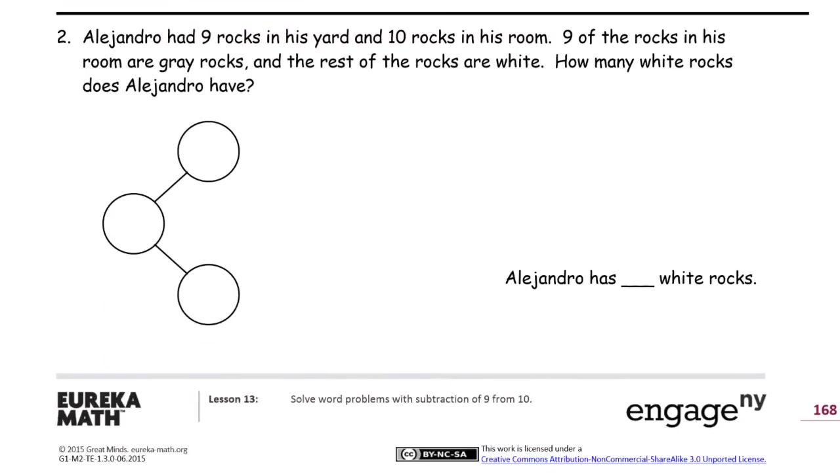Alejandro had 9 rocks in his yard and 10 in his room. So here's 9 in his yard and 10 in his room. 10 and 9 together make 19. The number bonds are already finished, and these are all Alejandro's rocks. Let's say A for Alejandro. Nine of the rocks in his room are gray rocks, and the rest of his rocks are white.